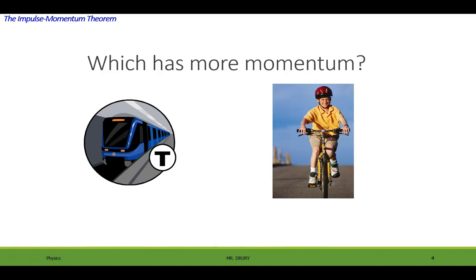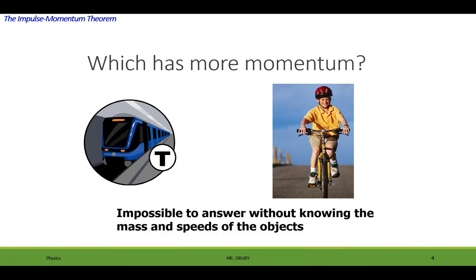Alright, so let's see if you understand this. Which has more momentum, a kid on a bicycle or a train? The answer is, it's an impossible answer without knowing the mass and speeds of both objects.